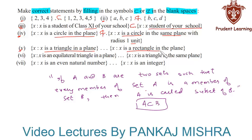In the fifth section, the first set is {x : x is a triangle in a plane} and the second set is {x : x is a rectangle in a plane}. From the definitions of triangle and rectangle, none of the members of the first set is also a member of the second set. So, the first set is not a subset of the second set.